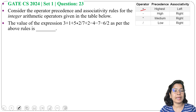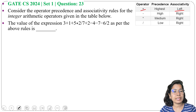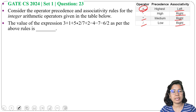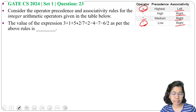According to this table, plus has the highest precedence and it is left associative. Next is minus, it is right associative. Next is multiplication, it is right associative. Next is division, it is right associative. So plus has the highest precedence whereas division has the lowest precedence.